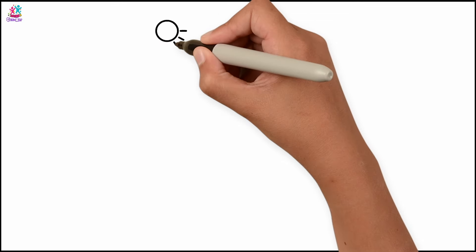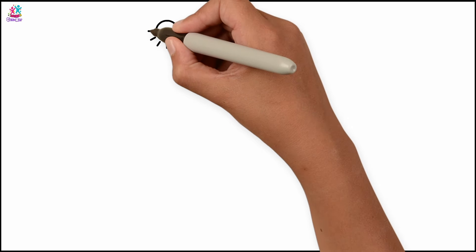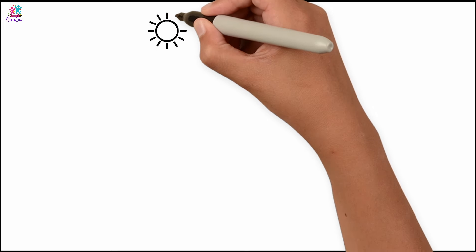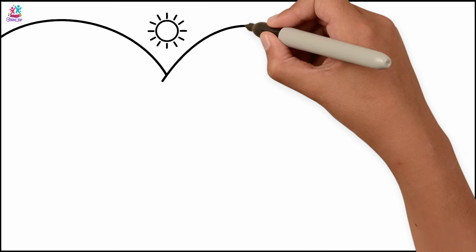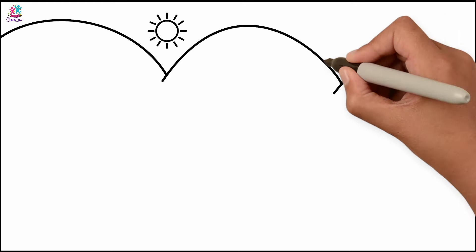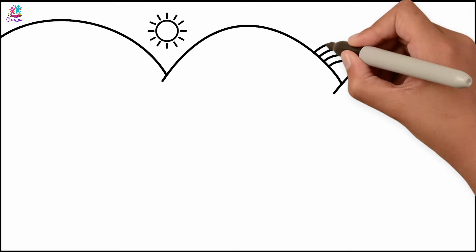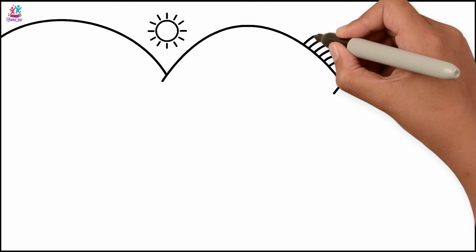We're going to start by drawing the sun — it's easy, just a circle with some rays. Now some curvy lines for hills, and a rainbow in between two of them.